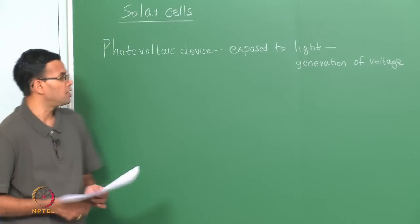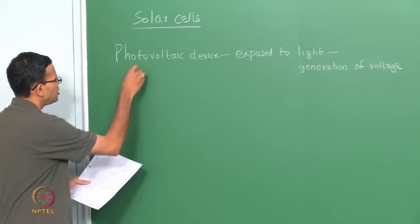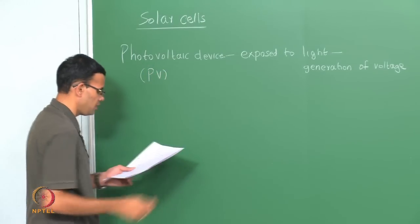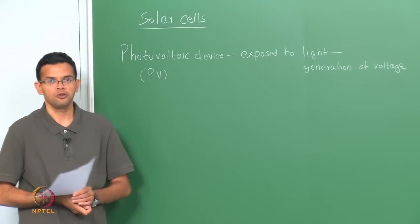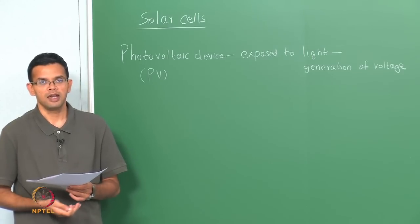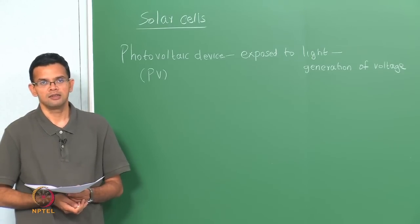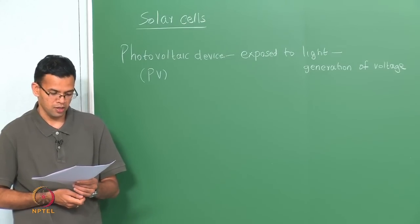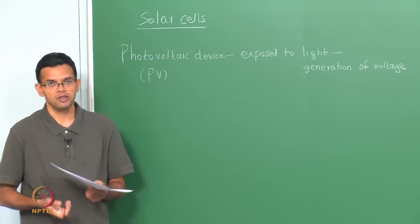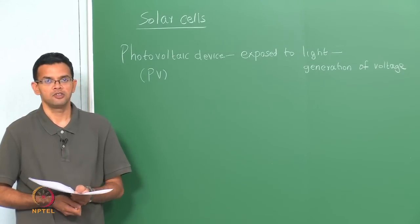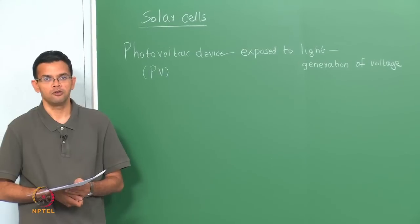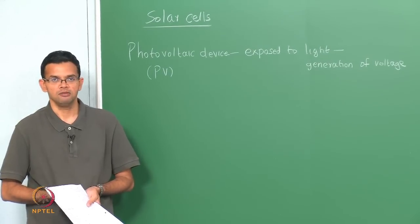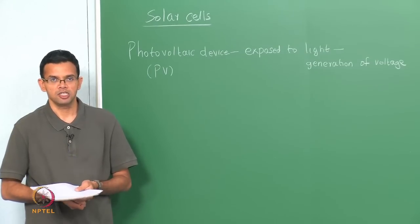The principle of a photovoltaic, abbreviated as PV, is similar to the photodetector we looked at last class — there are just a few crucial differences. In the case of a photodetector, one such example was a photodiode, which could be a simple PN junction or a PIN junction.